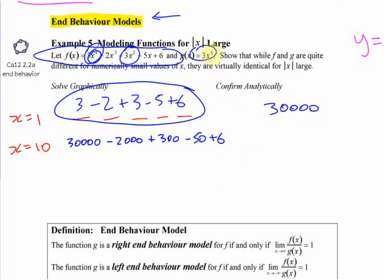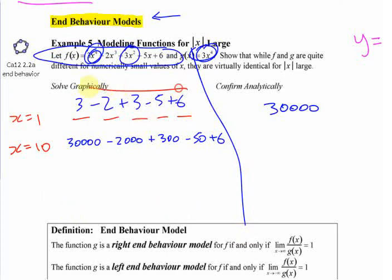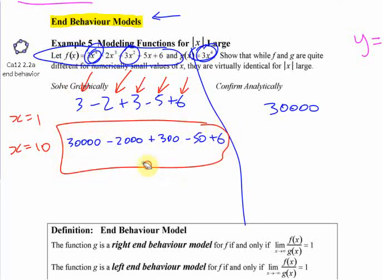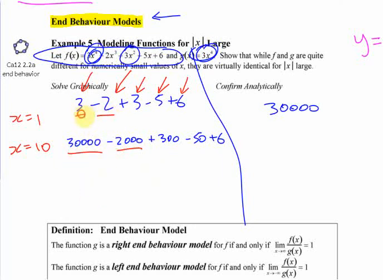I think if you think of it in terms of money, you'll see what's happening here. These are all significant compared to each other. If it's money and you start with three dollars but then you lose two dollars, that's a big chunk. Losing two dollars - two dollars is significant to three dollars, right? It's almost two-thirds of it. Then you get three dollars, you lose five dollars, you get six. They're all significant. If you have this - is 2,000 the same significance to 30,000 as two is to three? No, right? It's a lot less. This is a lot less.